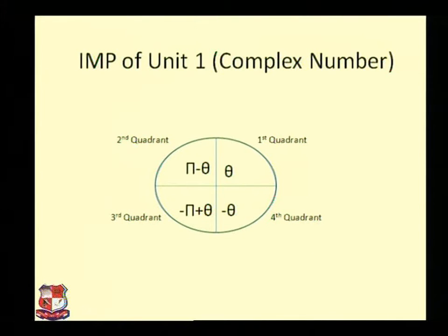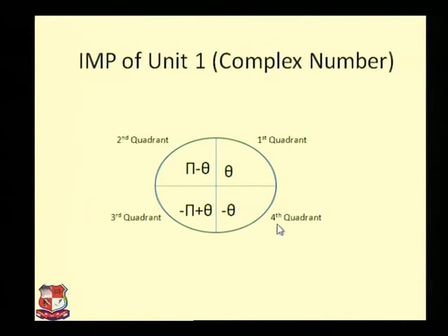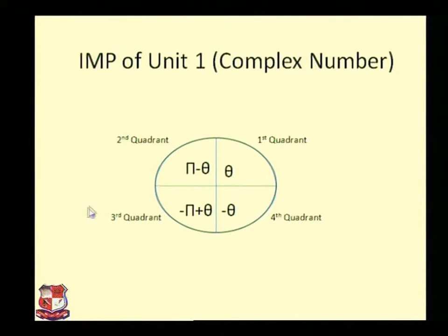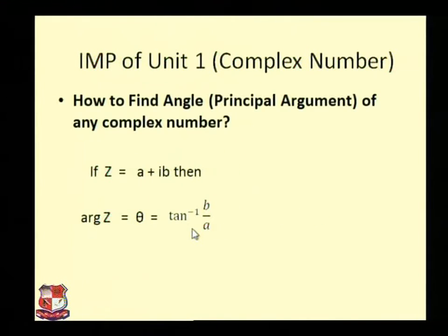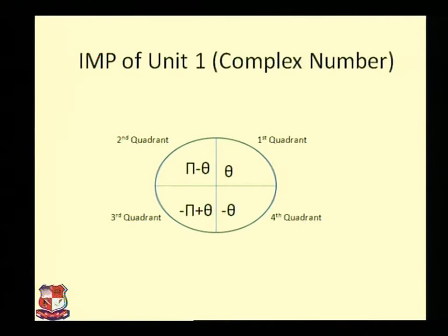This is our quadrant rule. If any angle θ is in the first quadrant, use it as-is. If in the fourth quadrant, use minus θ. If in the second quadrant, use π minus θ. If in the third quadrant, convert the angle to minus π plus θ. Based on θ = tan⁻¹(b/a) and the quadrant rule, we take some important problems.